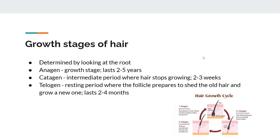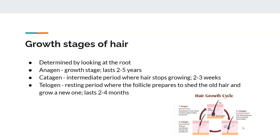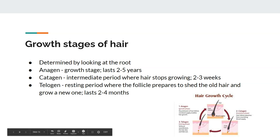You can look at the root to determine the growth stage in which the hair was pulled or shed. In anagen stage, the root is fat and bulbous and still has a blood supply — this is the active growth stage, lasting two to five years. Catagen is a transition phase where the hair is detaching from the blood supply, lasting about two to three weeks, and the bulb is narrower but not flattened. Telogen phase is where hair falls out naturally and a new hair starts growing — the root is very narrow, and this phase lasts two to four months.